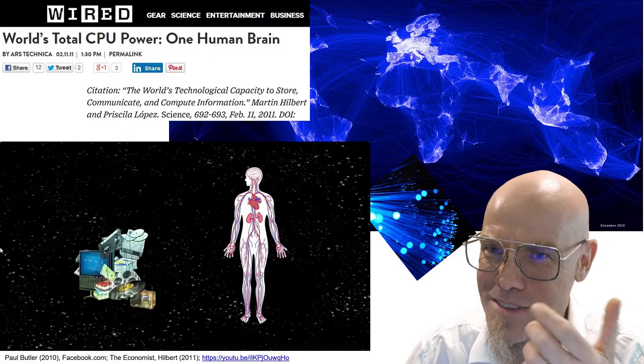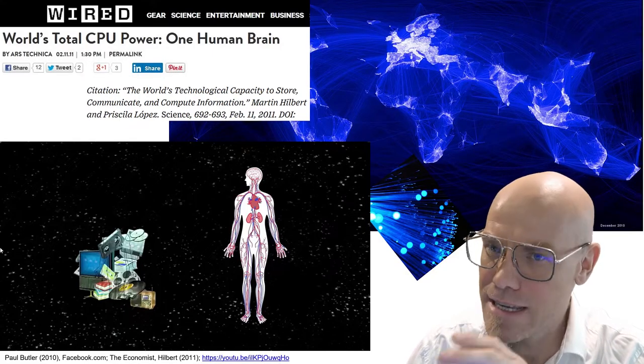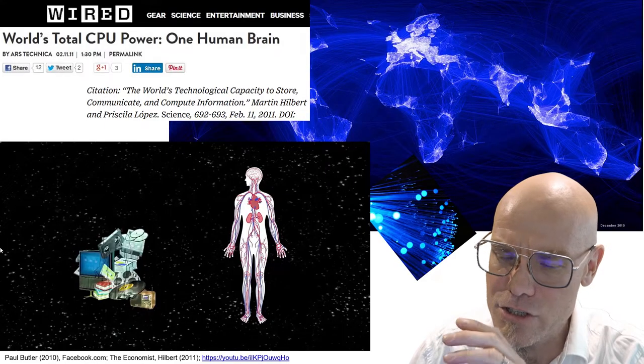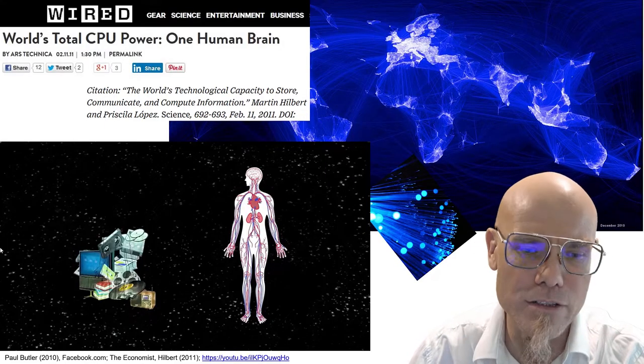And the global communication networks shuffle and send more bits around per second as the human circulatory system sends blood cells around per second, actually of several thousand people combined. And that just happened in the last 15 or 20 years that our technology has caught up to these mind-boggling orders of magnitude with which Mother Nature processes information.